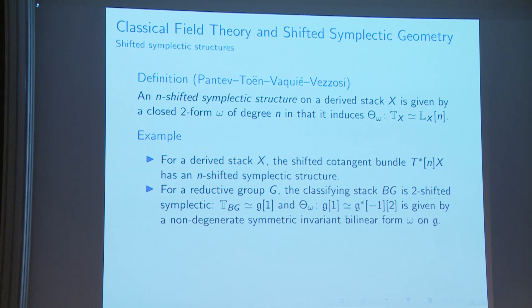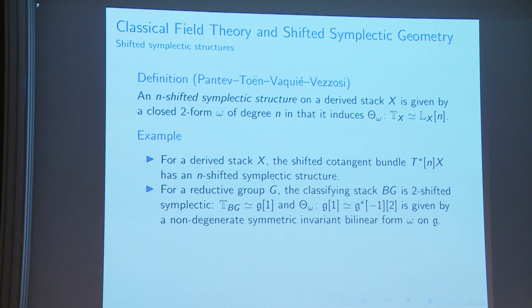You can see that BG is 2-shifted symplectic because the tangent bundle of BG is the Lie algebra g shifted by 1, and to have an equivalence between g[1] and its linear dual requires degree-shifting by 2. A symmetric invariant bilinear form on g gives this identification — that's the 2-shifted symplectic structure.